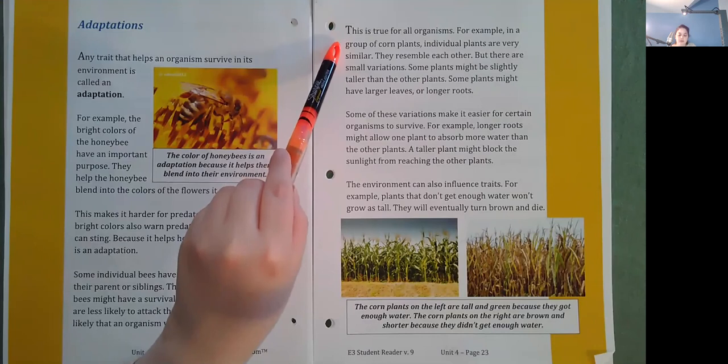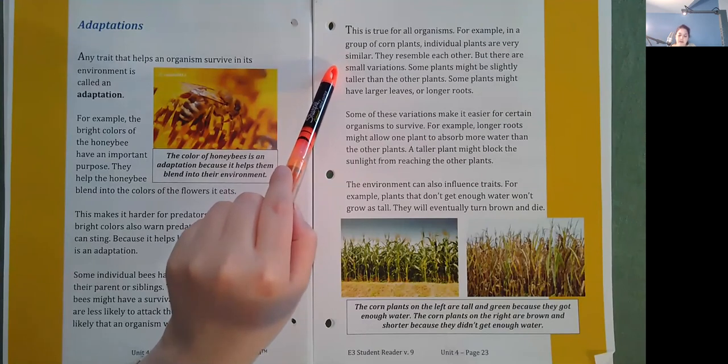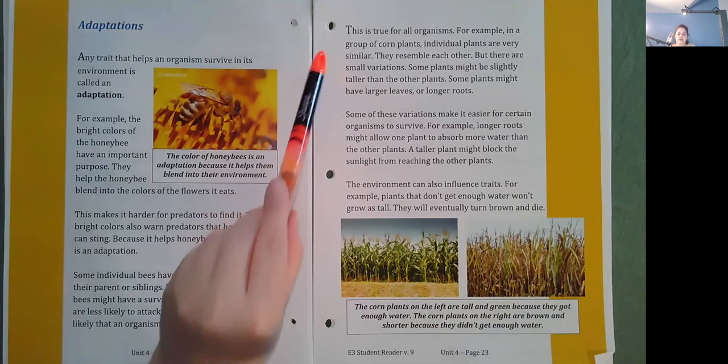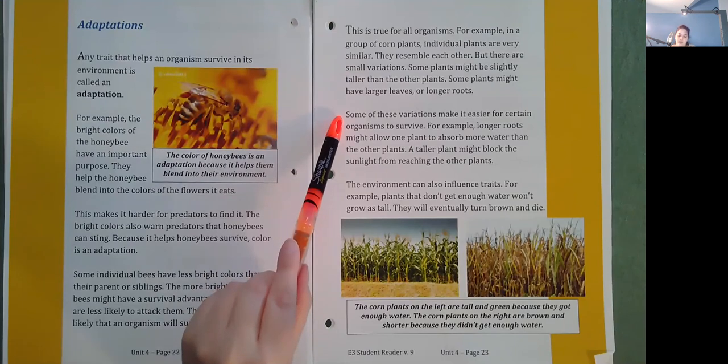For example, in a group of corn plants, individual plants are very similar. They resemble each other, but there are small variations. Some plants might be slightly taller than the other plants. Some plants might have larger leaves or longer roots. Some of these variations make it easier for certain organisms to survive.